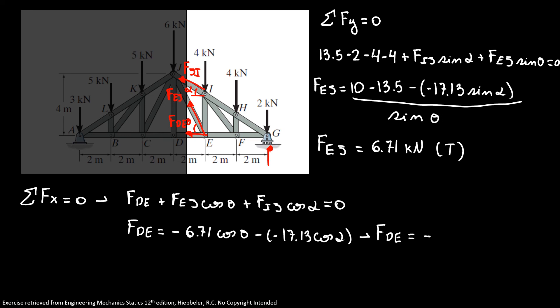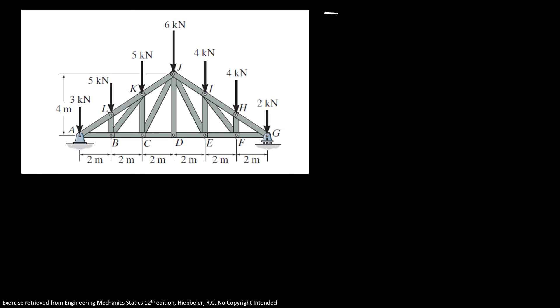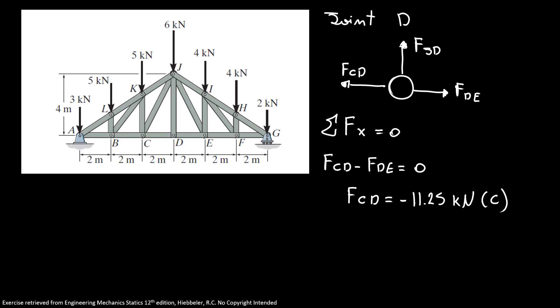But our question is interested to find our force CD. So now we're going to use our joint D. So here is our joint D, here I have a force JD, here I have my force DE, and here I have my force CD. If I do the sum of forces in x equals zero, I know that F_CD minus F_DE equals zero, so our F_CD equals minus 11.25 kilonewtons in compression as well. So we finalized another exercise.